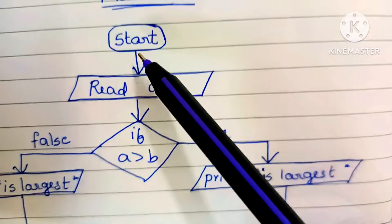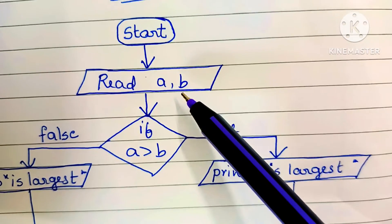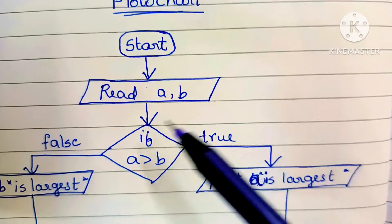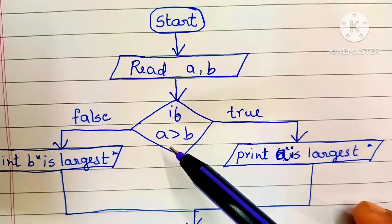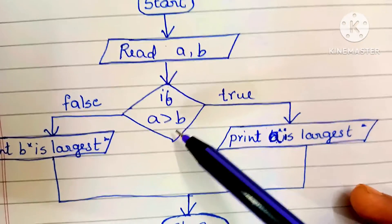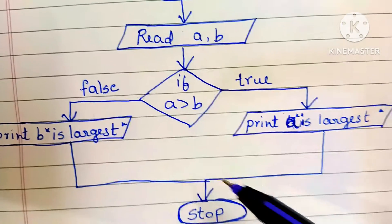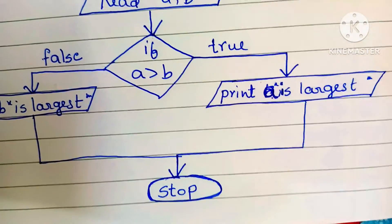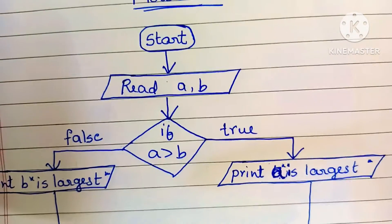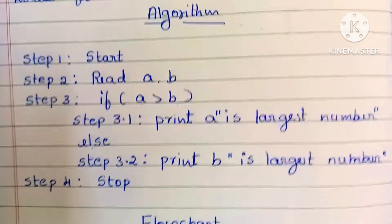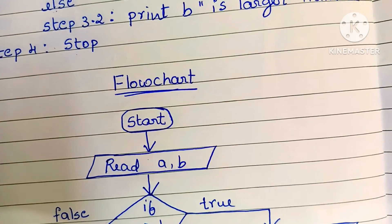The flowchart starts with the start statement, then reads a and b. Next it compares: if a greater than b is true, print 'a is largest'; if false, print 'b is largest'. Finally, stop using the stop statement. This is the flowchart to find the largest of two numbers. Thank you for watching — please like and subscribe!